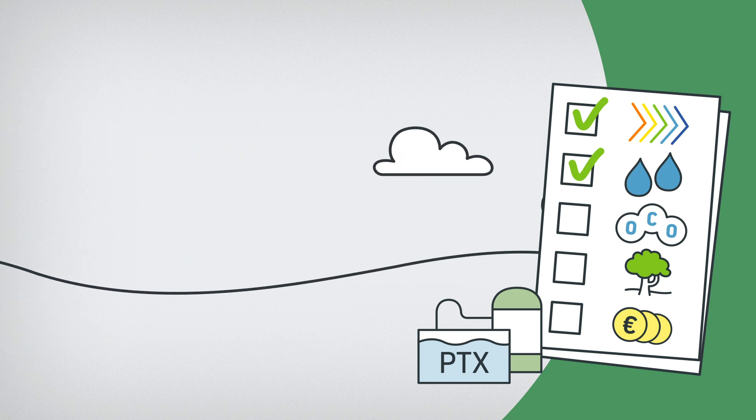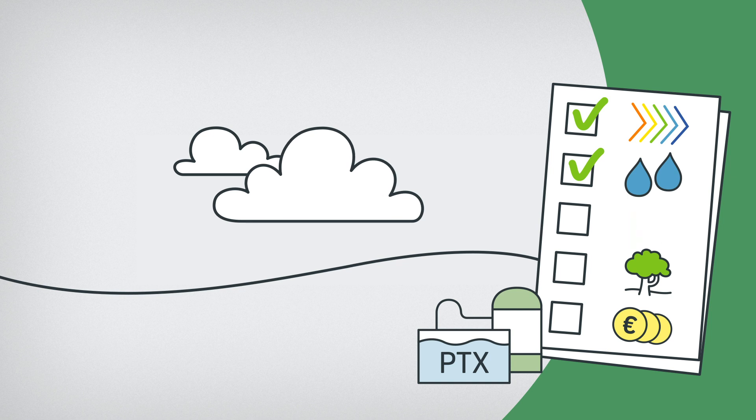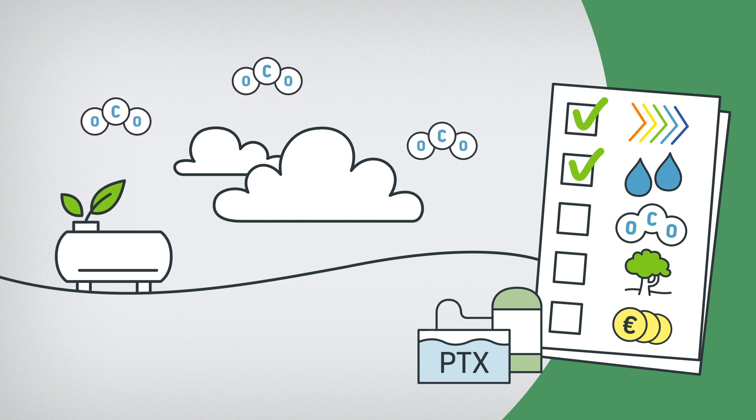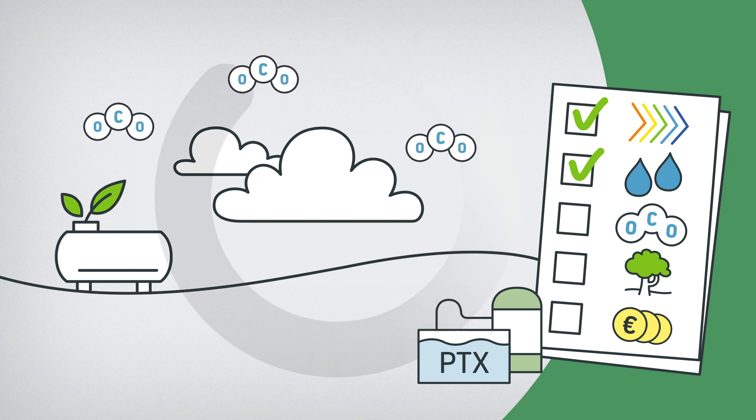To produce PTX from hydrogen, CO2 is needed. To avoid additional greenhouse gas emissions, this CO2 must be taken directly from the atmosphere or from processors using sustainable biomass. This is the only way to achieve a CO2 cycle with the surrounding air.